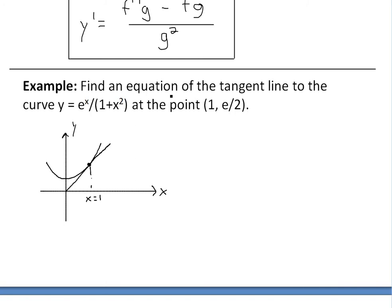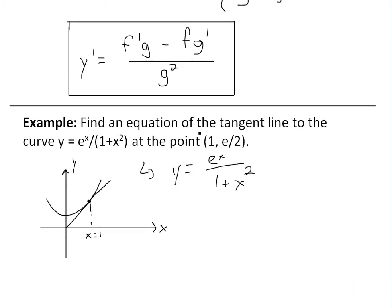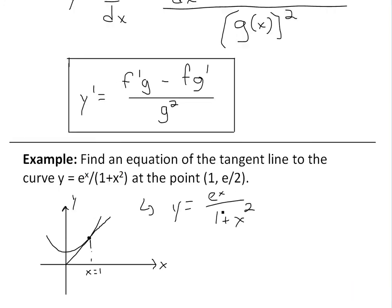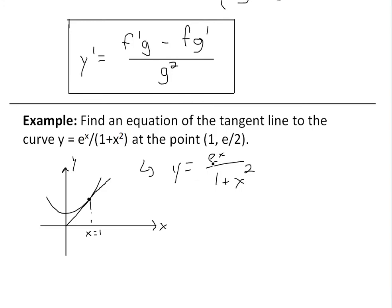So the first thing to do is find the slope, and you would have to take the derivative of this function y equals e to the x divided by 1 plus x squared. So now this is a division right here, and first thing to do is see if you can simplify it further, but you can't do it in this case. So now we can just simply apply the quotient rule.